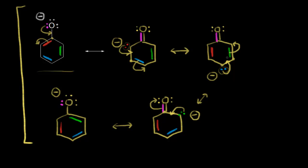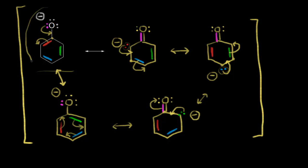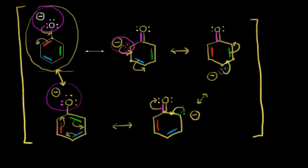We can put brackets around all five resonance structures. Since we're talking about resonance in the benzene ring, we can think about going back and forth — taking electrons in red, pushing into here, electrons in green over to here, electrons in blue over to here, which gives us back the one we started with. It's important to think about the hybrid: the negative charge is delocalized. In some resonance structures the negative charge is on the oxygen, and in others it's on specific carbons. So the negative charge is delocalized over the oxygen and three carbons in the resonance hybrid.